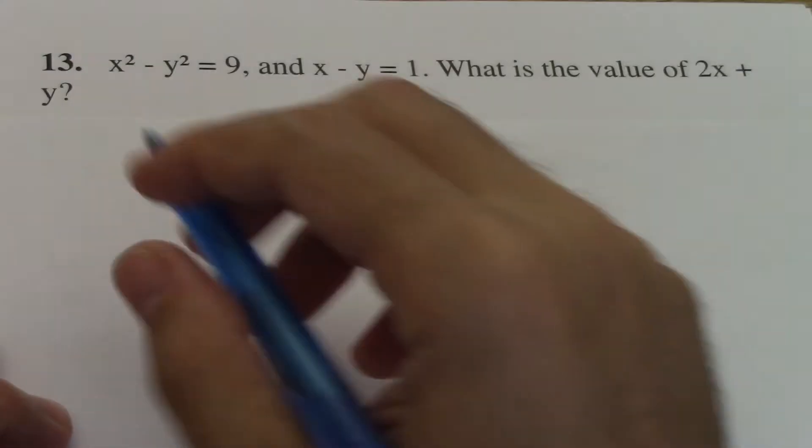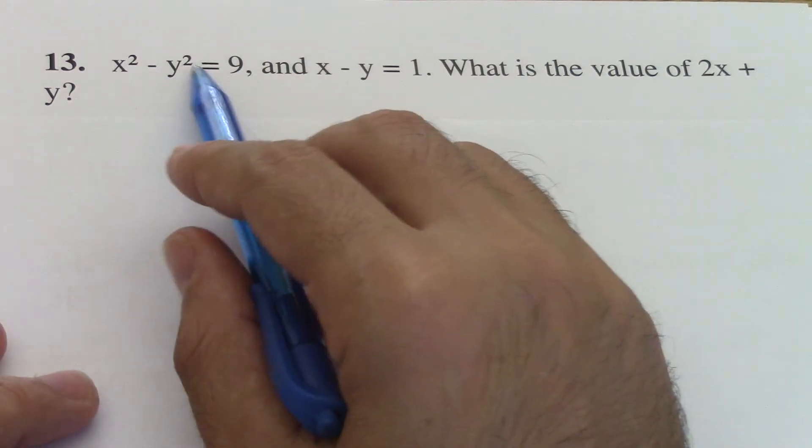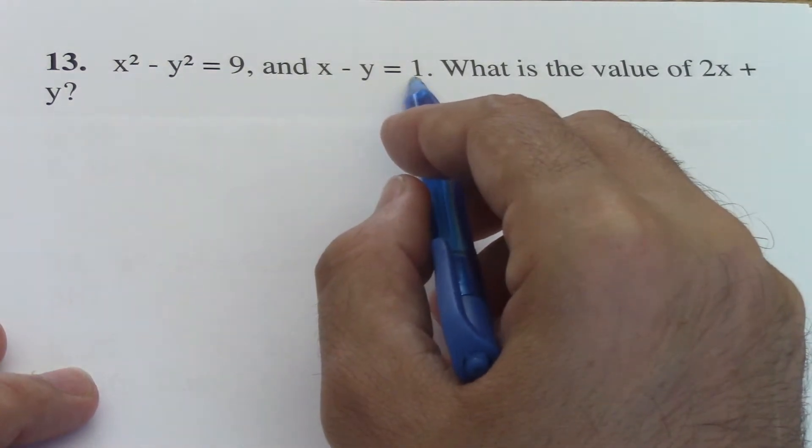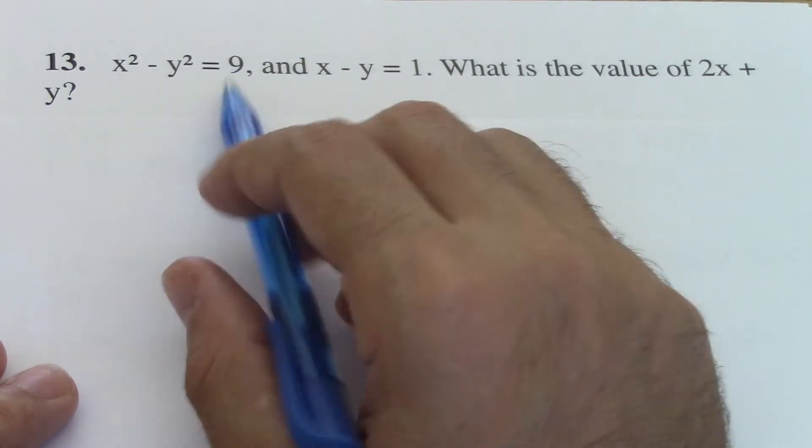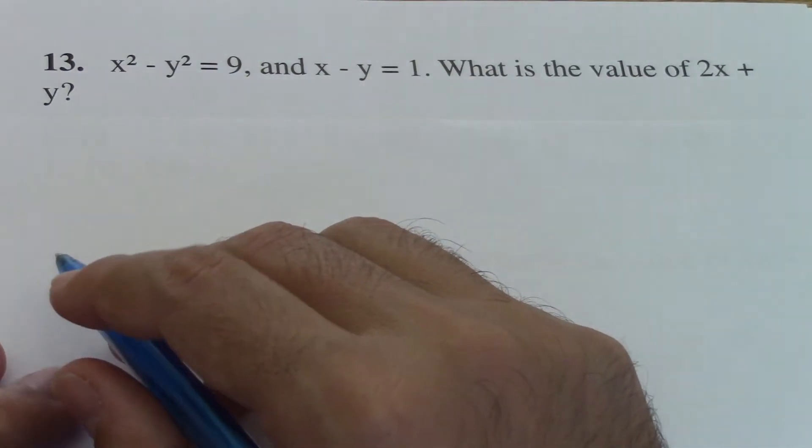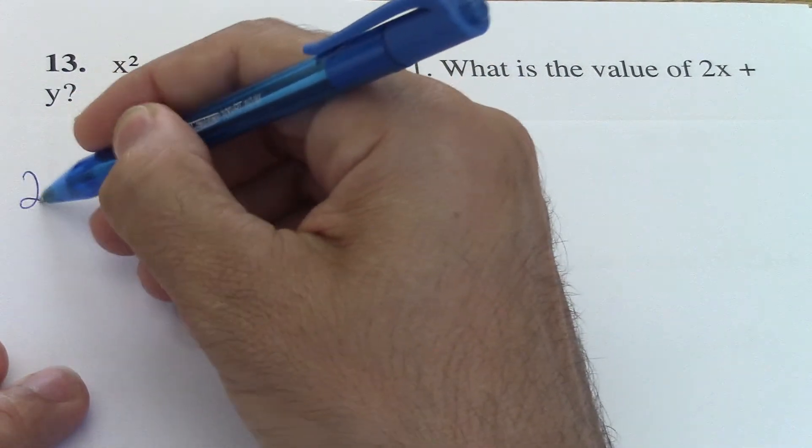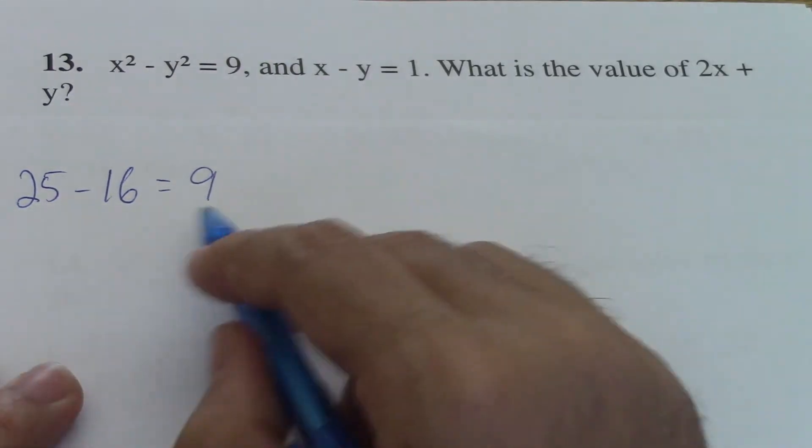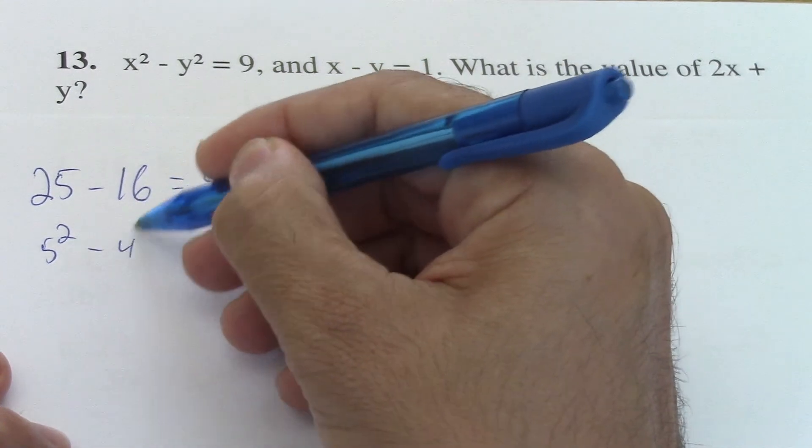Okay, let's continue practice for the SAT. Here's another question: x squared minus y squared is nine, and x minus y equals one. So here there are some numbers that you should know. For example, 25 minus 16 equals nine. Those are very special numbers because 25 is 5 squared, 16 is 4 squared.